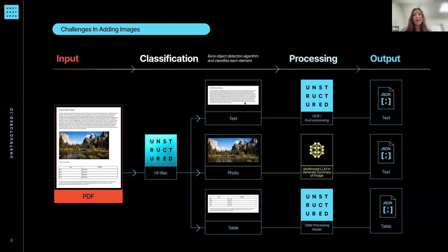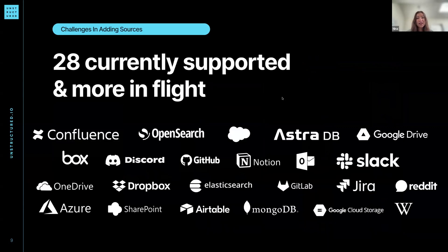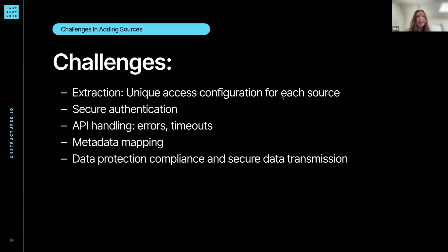Specifically for adding images, you have to think about different approaches and all the different things you want to capture about that image. If you want to support a lot of different sources, there are also different challenges there. We have 20 sources that we support, anything from AstraDB to GitHub to Notion — lots of different places where you might have all different kinds of files, including images and other attachments.